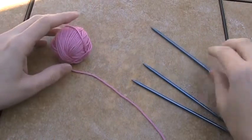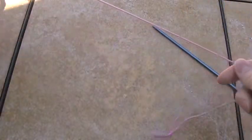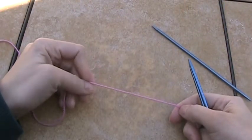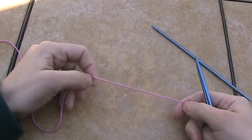Let's talk about Judy's Magic Cast On. This is a great way to start toe up socks, although it has other uses too. If you wanted to cast on a sweater button band in the middle of the back neck, this would be a good way to do it.